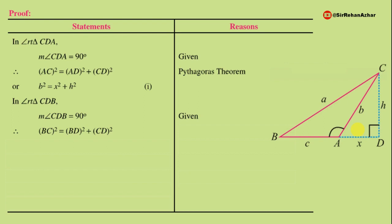Substituting values: a² = (c + x)² + h². Note that BD = BA + AD = c + x, so the total distance from B to D is (c + x). This gives us a² = (c + x)² + h².